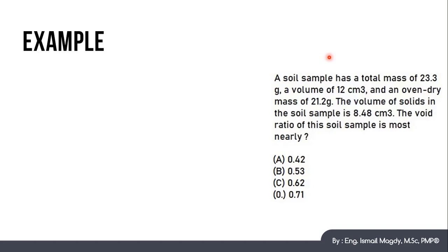So let's start by the data that we already have in this example. We have the total weight which is 23.3 gram, the total volume which is 12 cm cube, the weight of the solids which is 21.2 grams, and the volume of solids which is 8.48 cm cube. And here we want to calculate the void ratio.